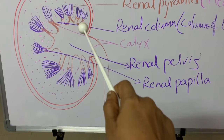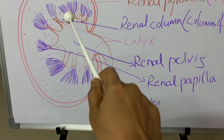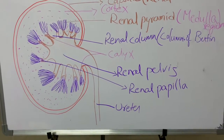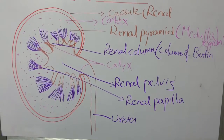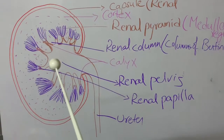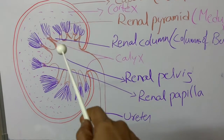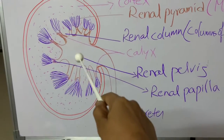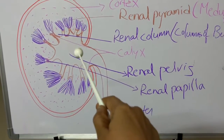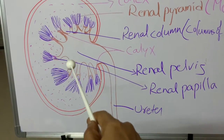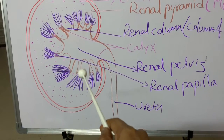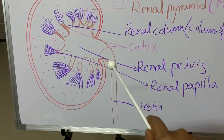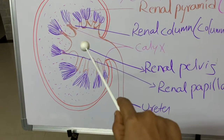The renal papillae are present above cup-like structures known as calyces (singular: calyx). They are named calyx because they look like the sepals of a flower. These calyces are projections of the pelvis region. This cone-like structure is known as the renal pelvis, and from the renal pelvis these cup-like projections arise.